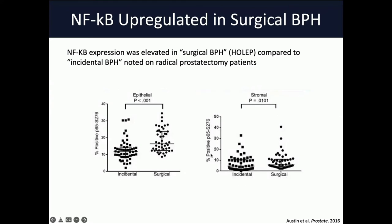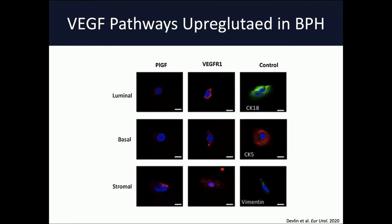In line with this, other studies have looked at cytokine expression, and there is evidence that cytokines like NF-κB and IL-17 are upregulated in BPH tissues compared to incidental BPH specimens — for example, one study shows upregulation of NF-κB compared to incidental BPH noted on radical prostatectomy patients.